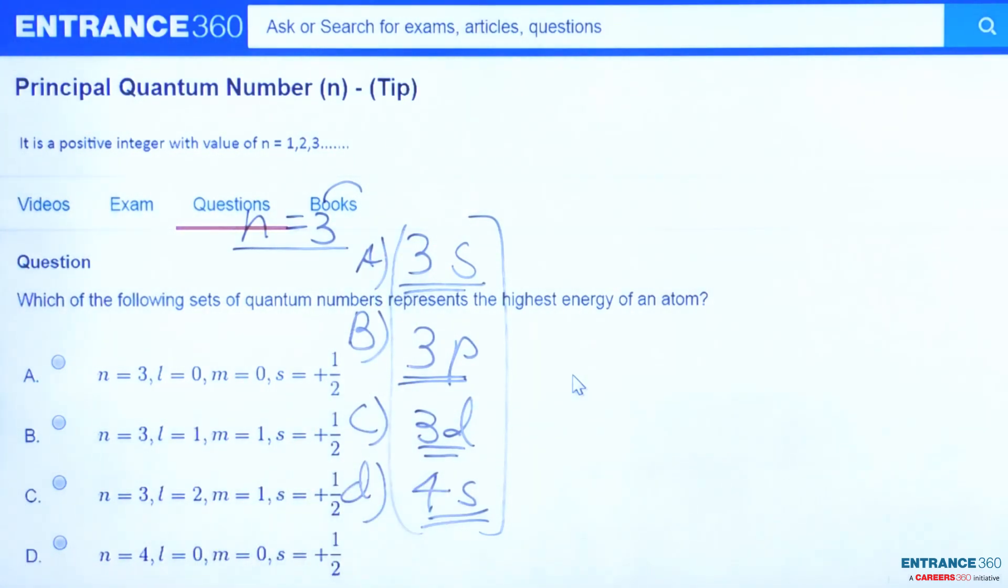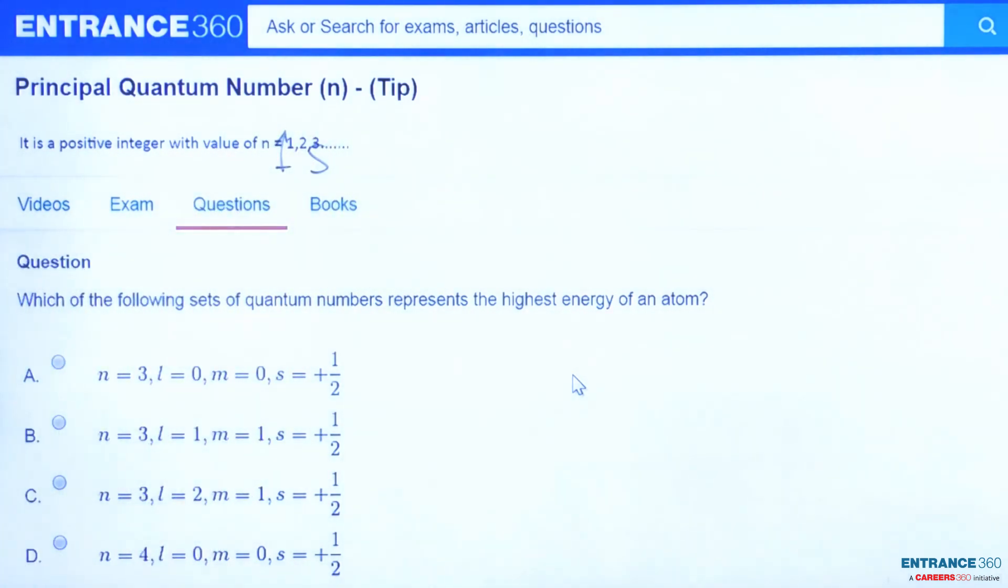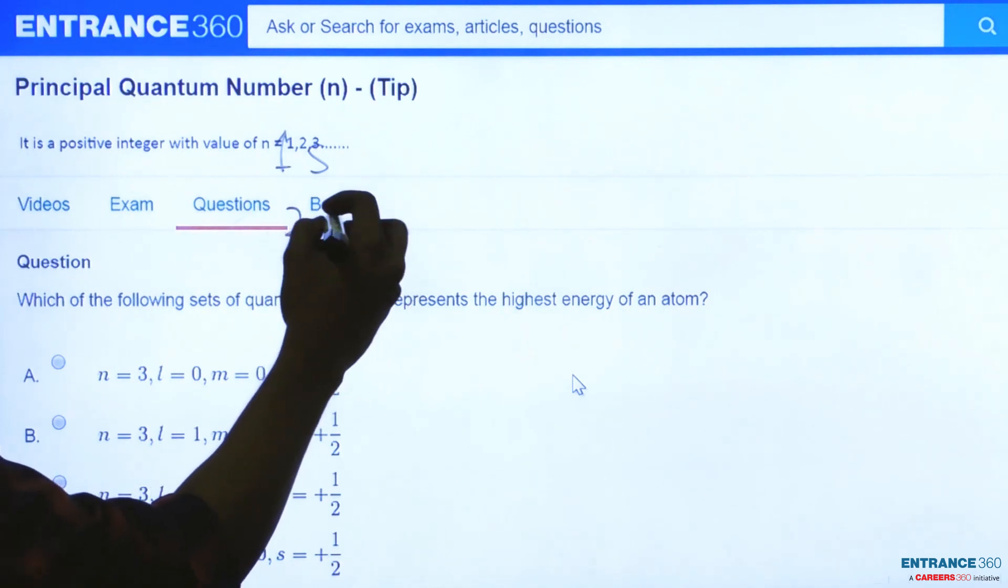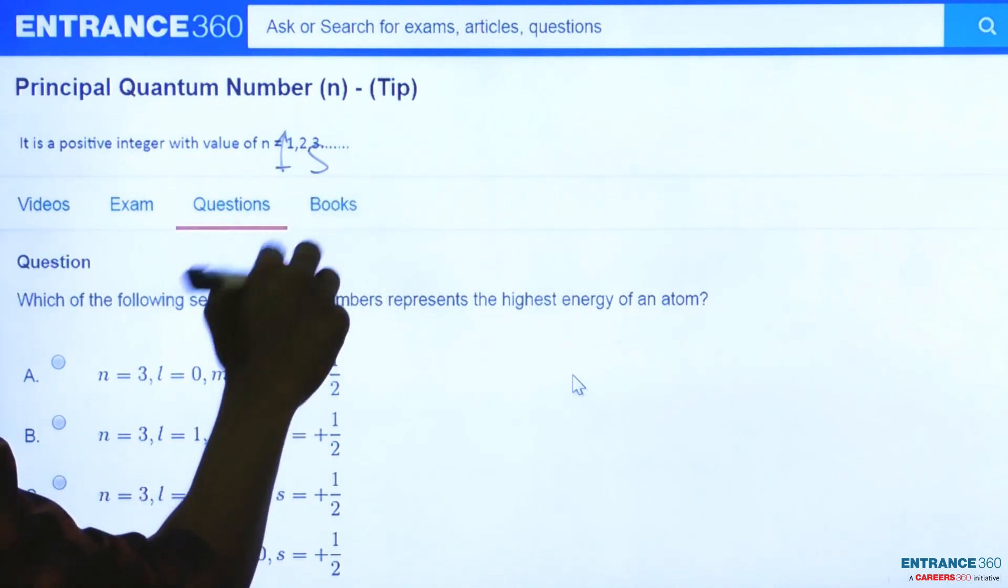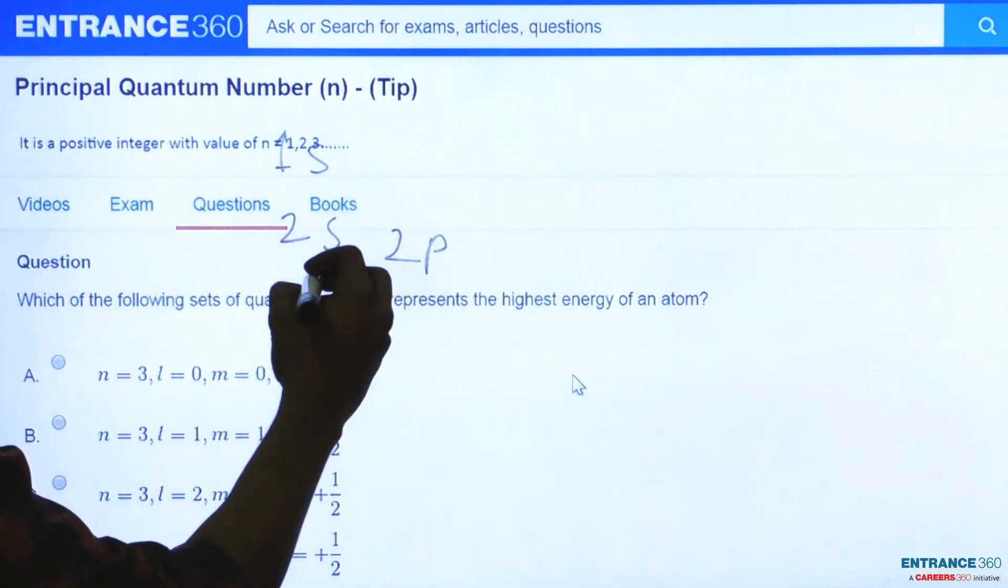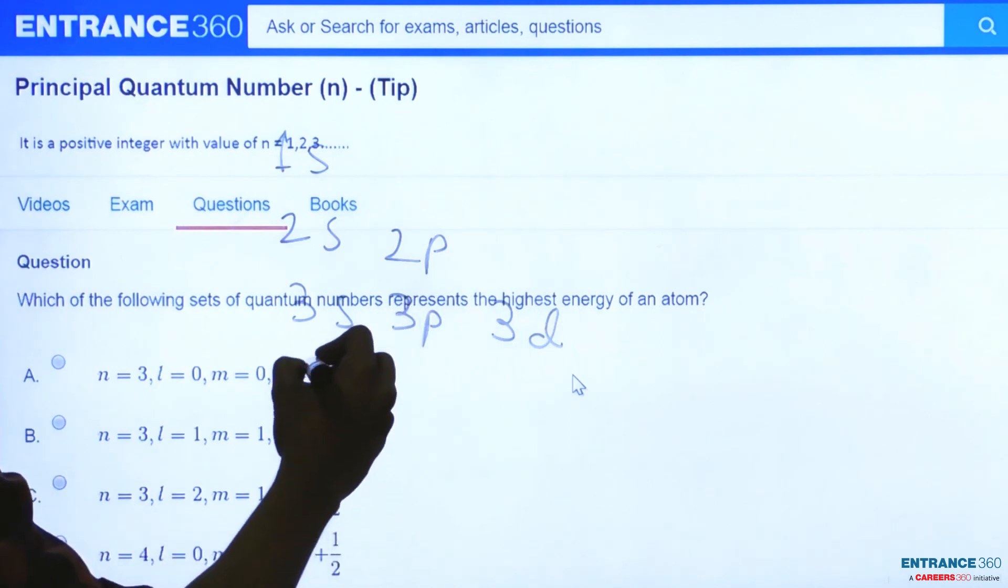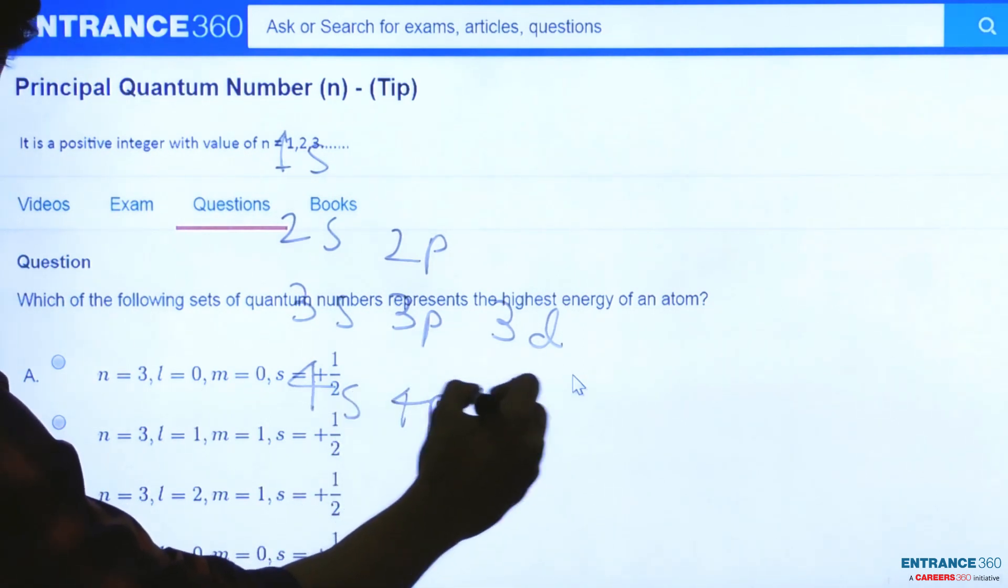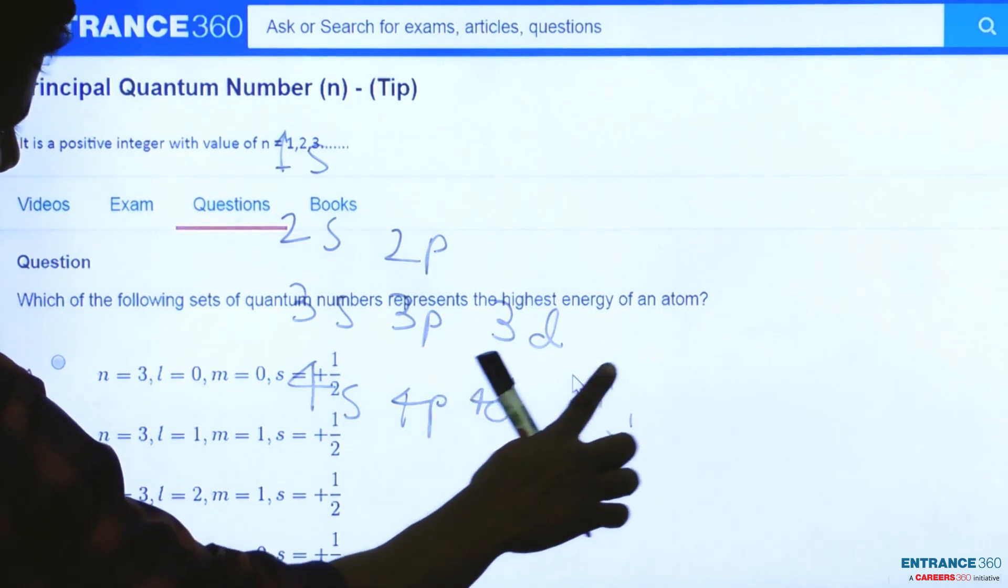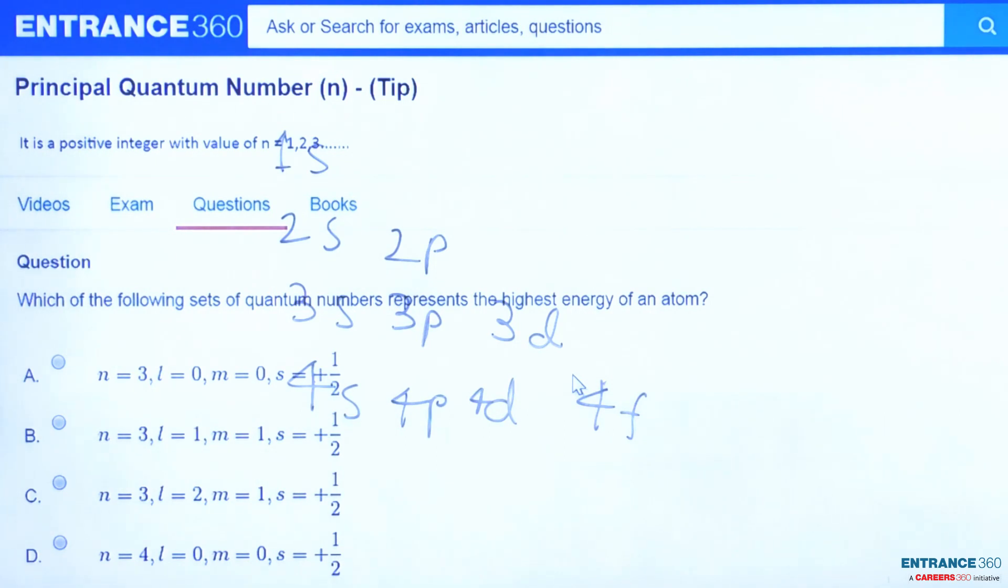So let's find out their order of energy. When we fill electrons to find their energy, this will be the table. This will be 1s, 2s, 2p, and this will be 3s, 3p, 3d, and this will be 4s, 4p, 4d. We will see the order of energy will be like this.